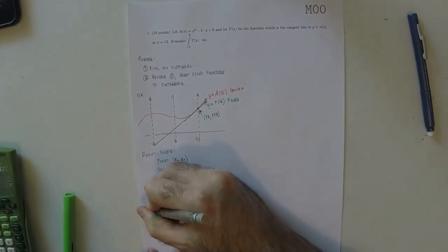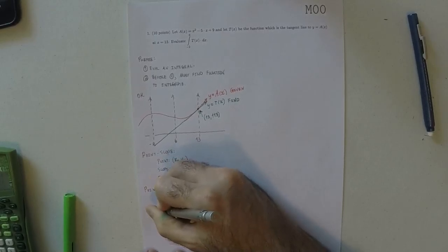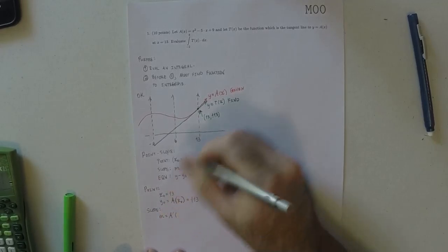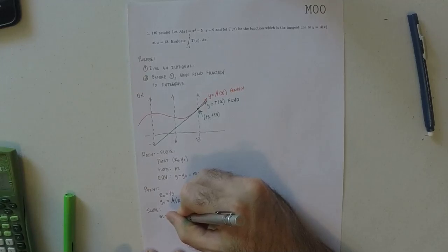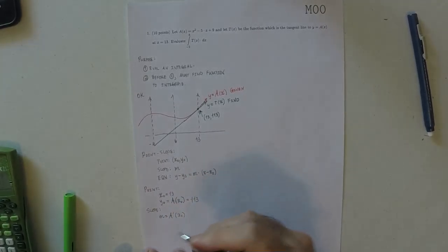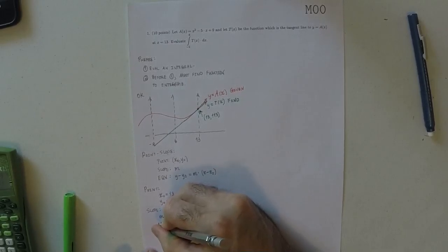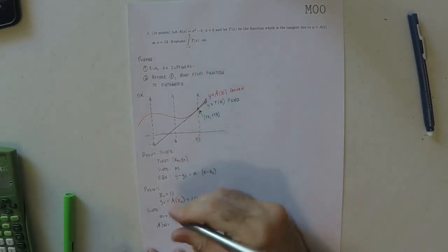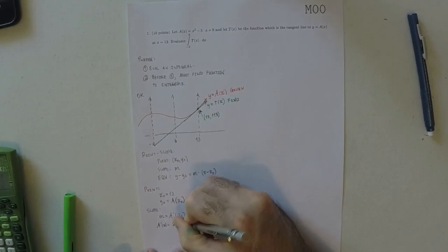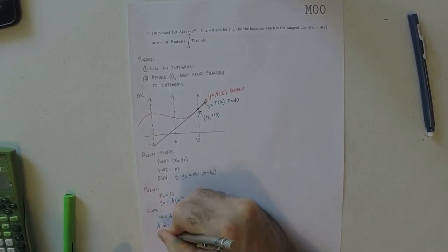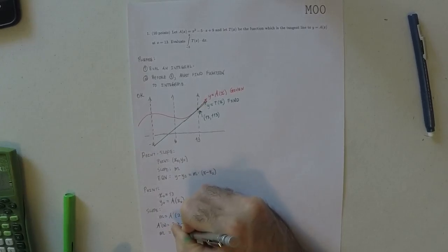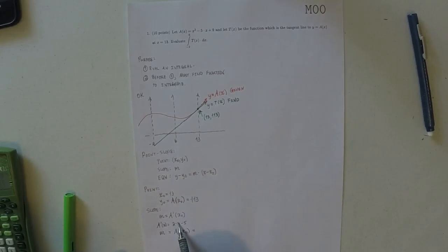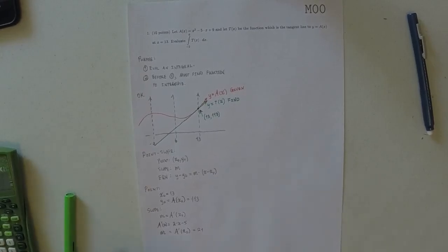And then for the slope, the slope is going to be the derivative of the red function evaluated at x0. Well, to find that, first we need to find the derivative. So the derivative at any x is 2x minus 5. And so specifically where we're interested, that's 2 times 13 is 26 minus 5 is 21. So the slope is 21.